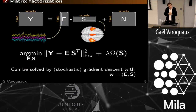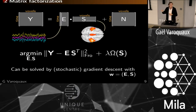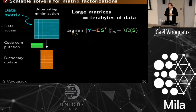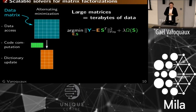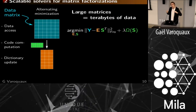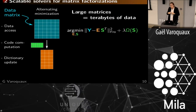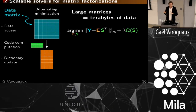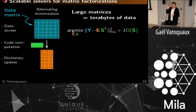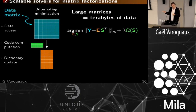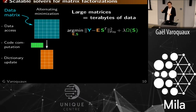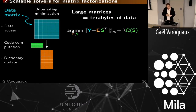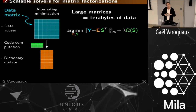This is typically done for recommender systems using stochastic gradient descent. We approached this in a different setting: brain imaging, with huge matrices that were huge in both directions. The naive way of tackling this is alternated minimization — block coordinate descent. I minimize with respect to E keeping S constant, then minimize with respect to S keeping E constant, and alternate, which hopefully converges because each time I'm decreasing the cost.